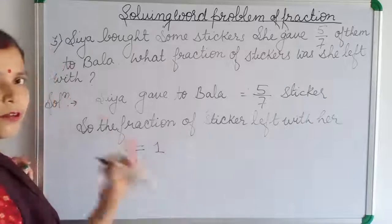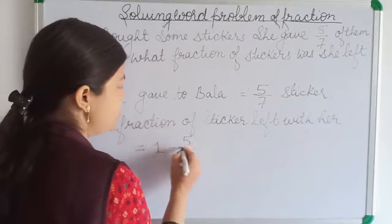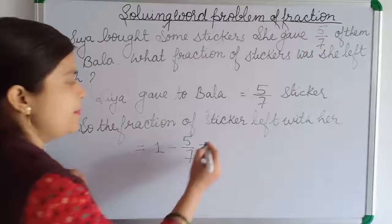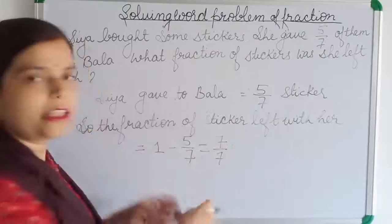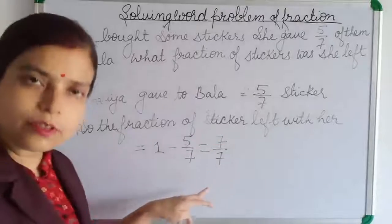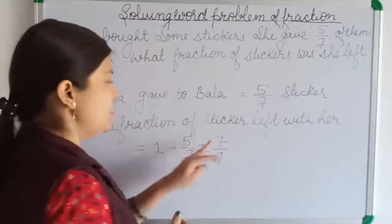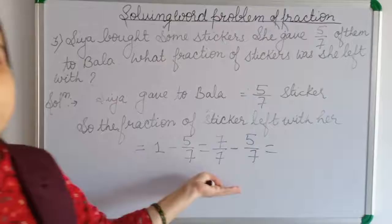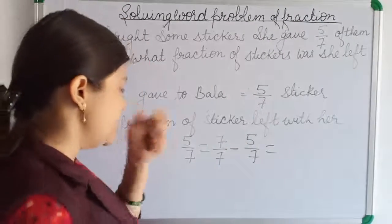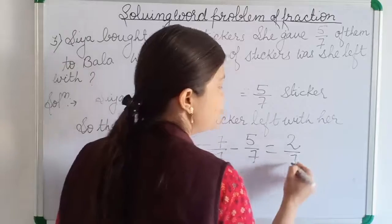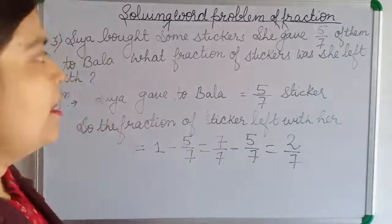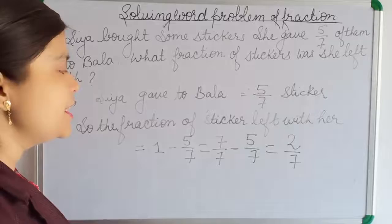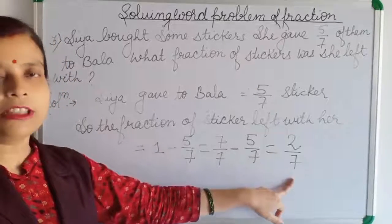The fraction of stickers left with Shia equals 1 whole minus 5 by 7. We write 1 as 7 by 7. So it is 7 by 7 minus 5 by 7. This is a like fraction, so we subtract the numerators: 7 minus 5 equals 2. Therefore, 2 by 7 stickers are left with Shia.